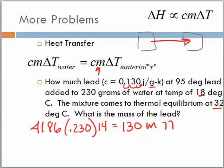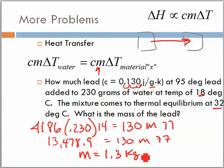Now, at this point, what we'll do is we'll take and multiply the one side. And on the one side, I'm going to get a really large number. 13,478.9 is equal to 130m times 77. And what we get then is a mass that's equal to 1.3 kilograms.